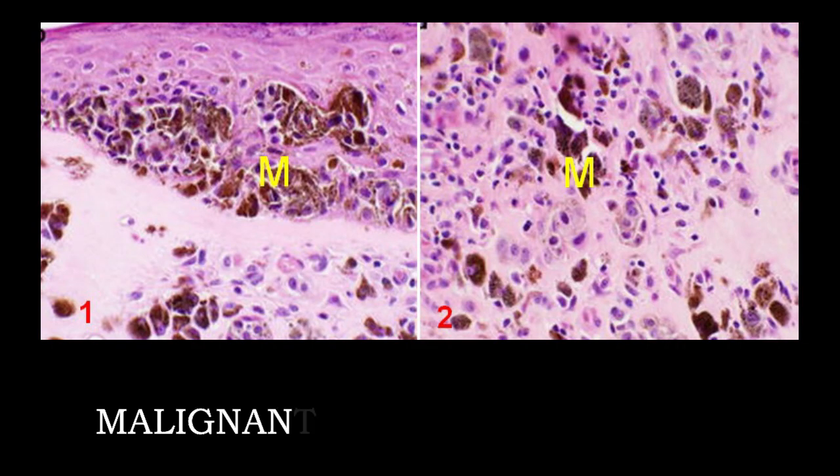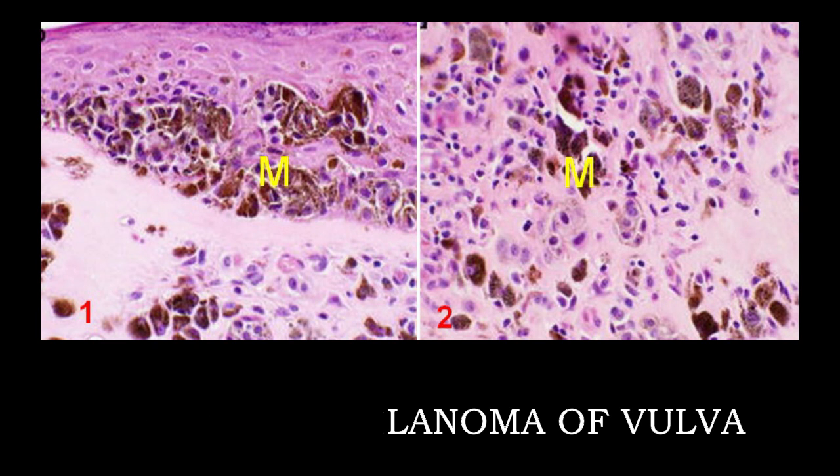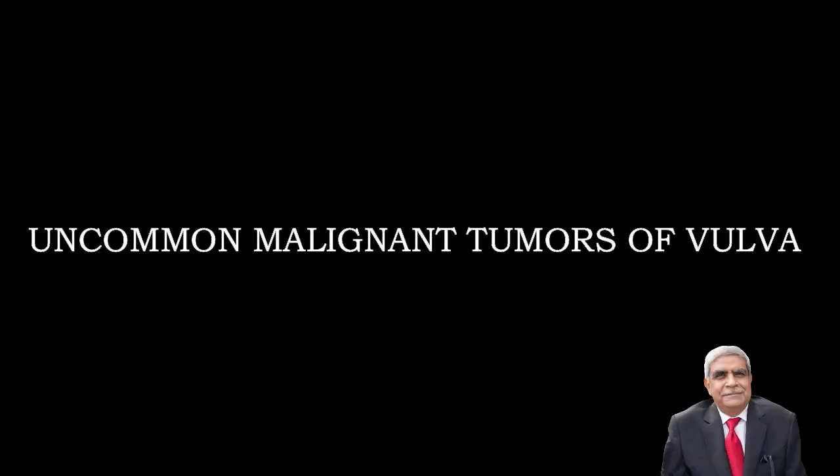Two photographs show microscopic appearances of malignant melanoma. The first photograph shows atypical melanocytes containing melanin, marked with yellow M, present at the dermo-epidermal junction and in the epidermis. In the second photograph, atypical melanocytes containing melanin, marked with yellow M, are present in the dermis.